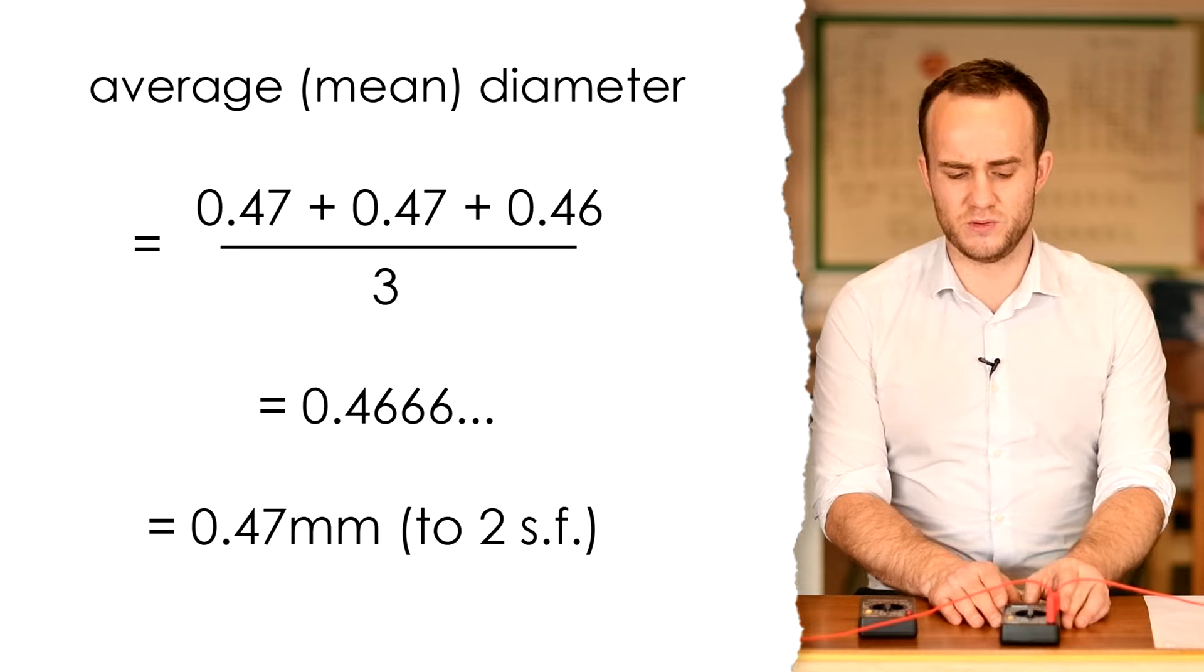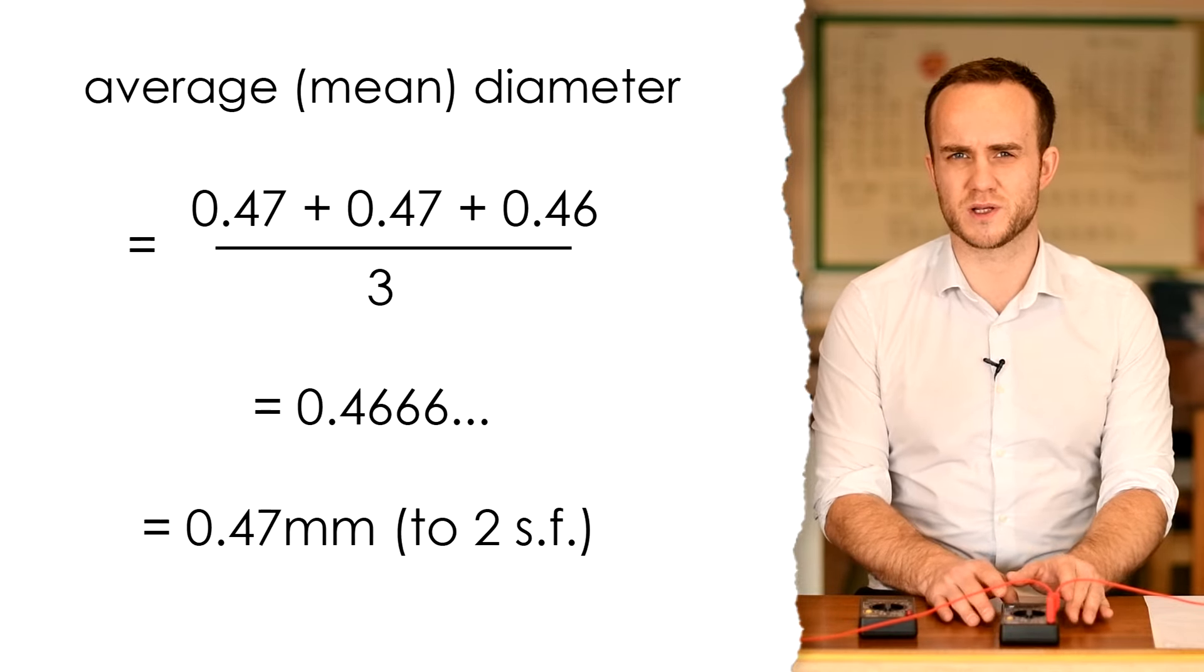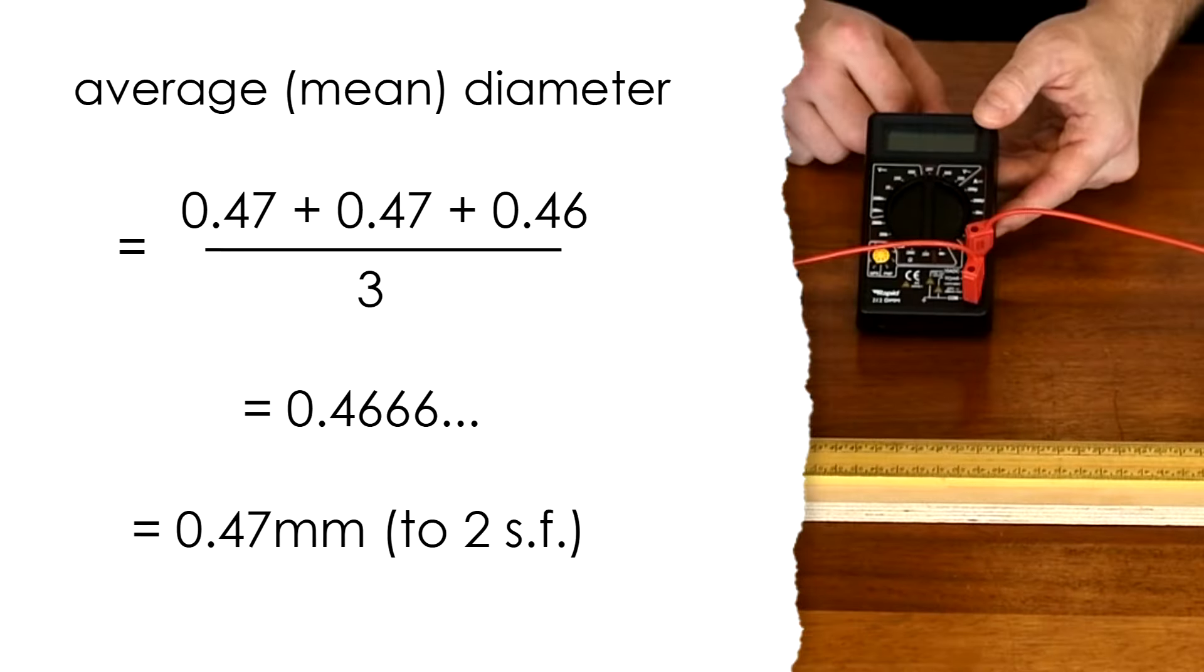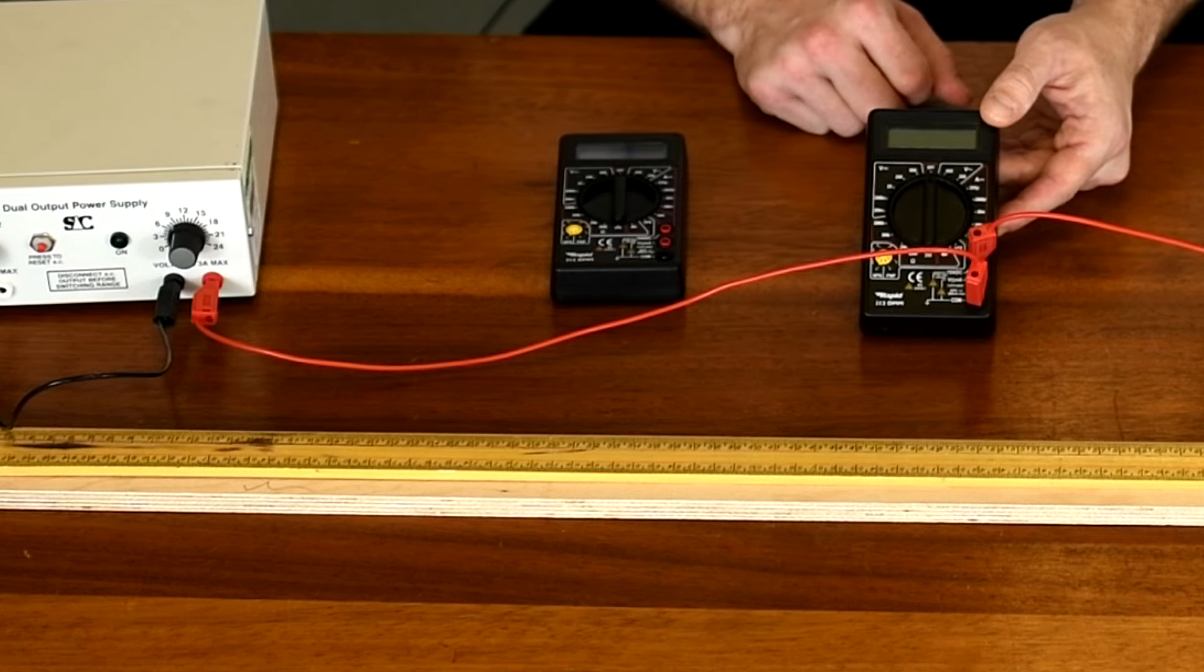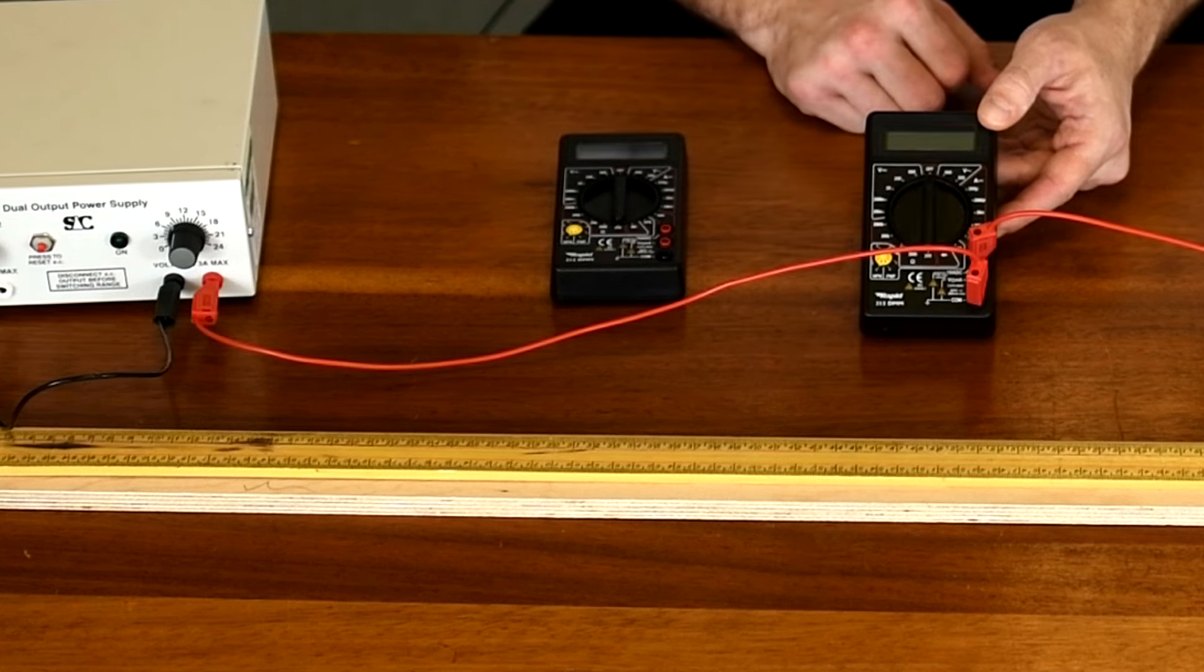Now if you haven't used a multimeter before, make sure that you know how to use it because it does have fuses in, and if you send too high currents going through it it can blow the fuse and then you have to replace them. You don't want to do that. You always put one cable into common down the bottom there. With this multimeter you then have an option as to whether you put the other lead in the 10 amps DC socket or the voltmeter and milliamp socket.